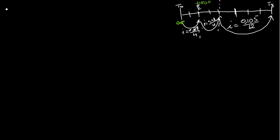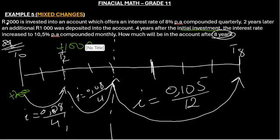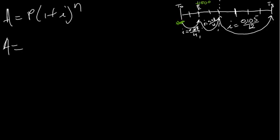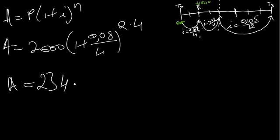The formula we've been using is: A = P(1 + i)^n. In this case, P is the money invested at first — 2000 rand. So we have A = 2000 × (1 + 0.08/4)^(2×4), for the first two years compounded quarterly. We get A = 2343.31876...